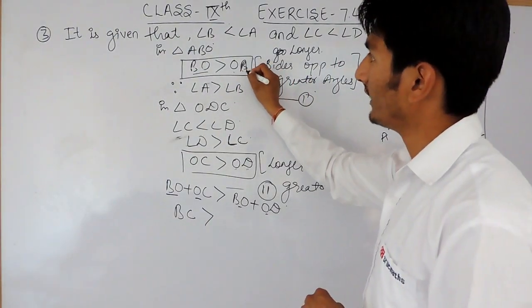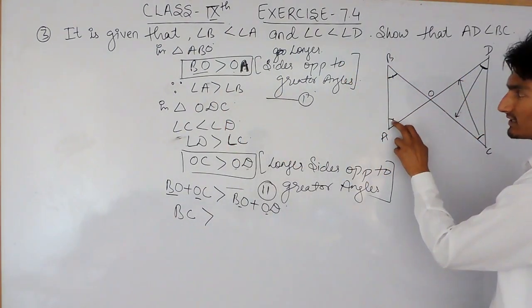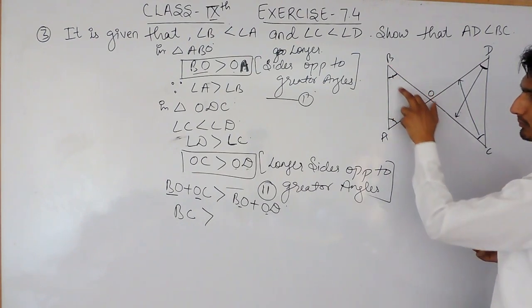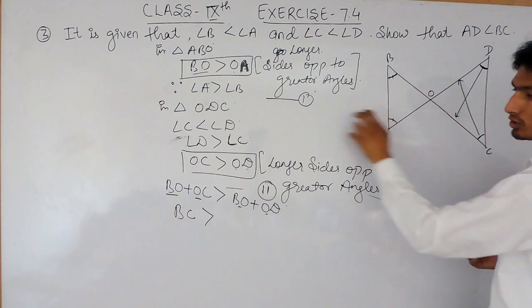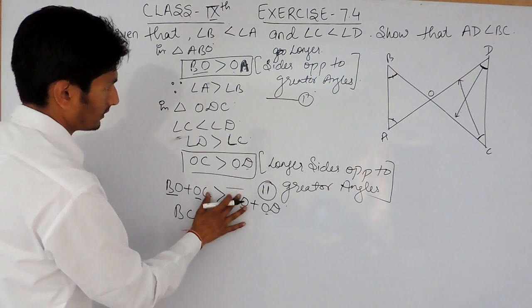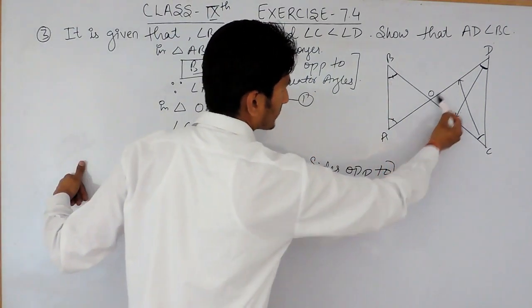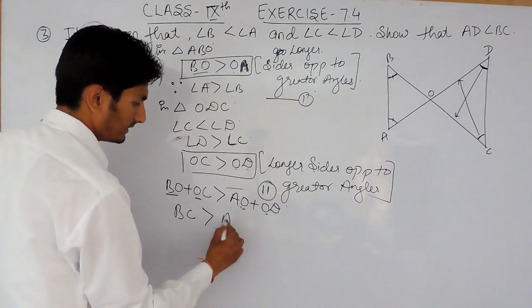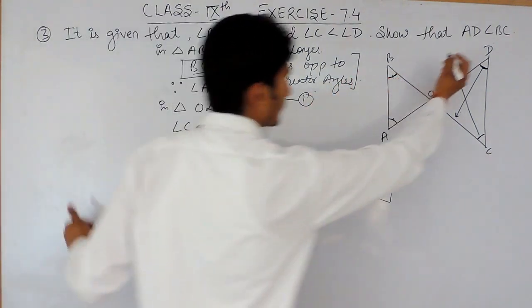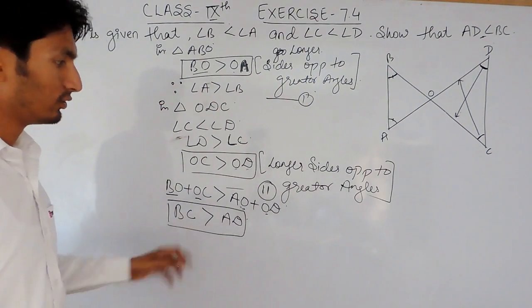And OA plus OD can be written as AD. So this is the same as AD is less than BC. This is how we prove the required result.